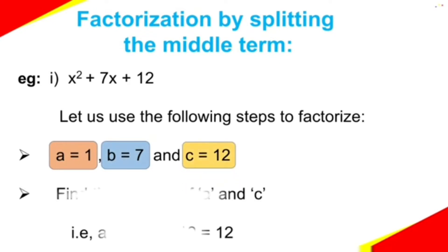Next, find the product of the values of a and c, that is a × c = 1 × 12 = 12.